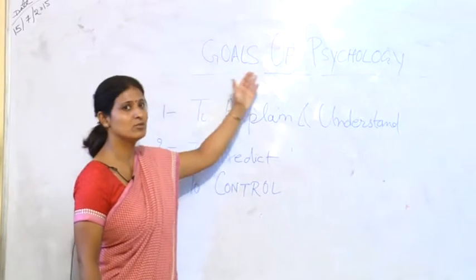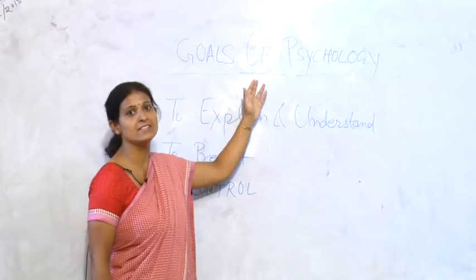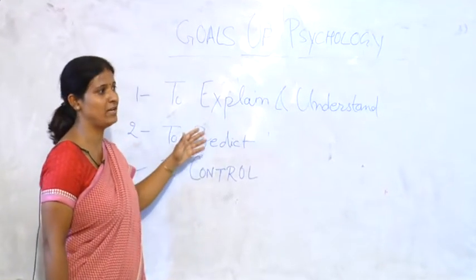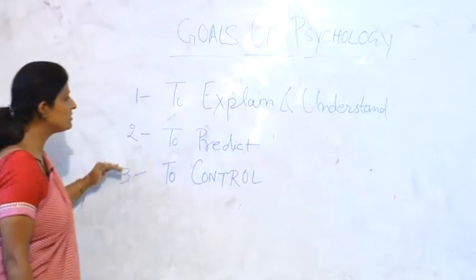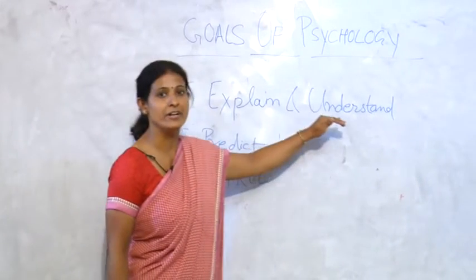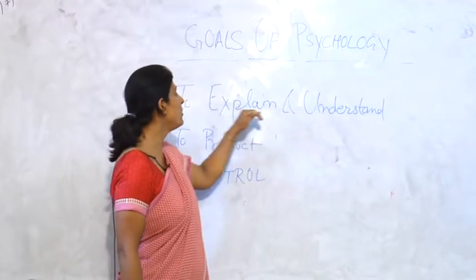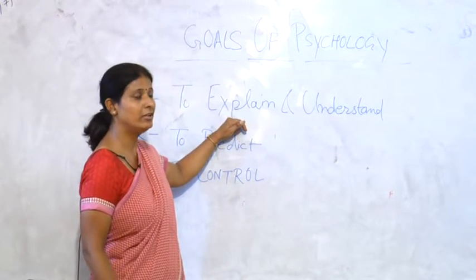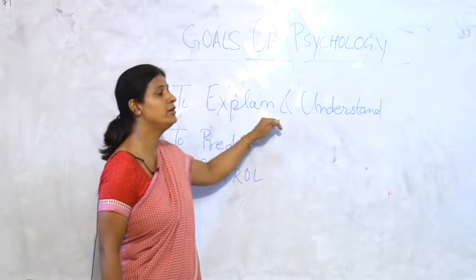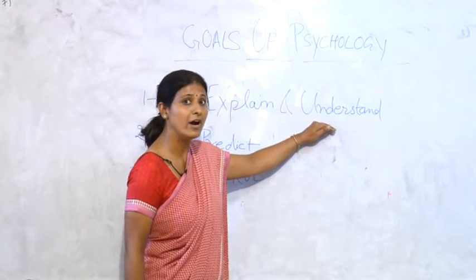What are the goals of psychology? The three goals of studying behavior are to explain and to understand. Firstly, we study human behavior to explain it — what human beings do and how they do it. Those are the topics to explain and to understand.